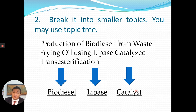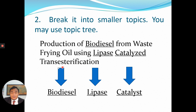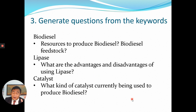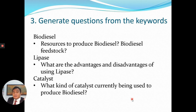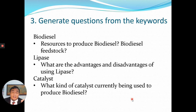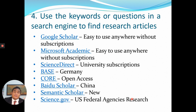You break the title into smaller topics — the keywords. You may use a topic tree, or simply extract keywords like biodiesel, lipase, and catalase. After bringing out the keywords, generate questions from them. For biodiesel: what are the resources and feedstock to produce biodiesel? For lipase: what are the advantages and disadvantages of using lipase? For catalyst: what kind of catalyst is currently being used, what was used before, what is new? You ask questions to help find the journal articles to review.